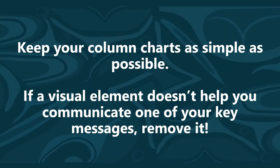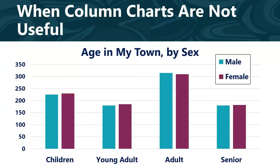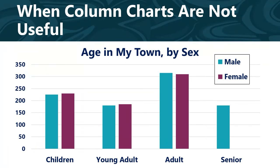Also, and this is true for presenting any health data, make sure your visuals are as simple as possible. That means if a visual element doesn't help you communicate one of your key messages, remove it — including any unnecessary images, labels, logos, borders, grid lines, and backgrounds that can add visual clutter and distract your audience. Everyone has different comfort levels when it comes to interpreting graphs and other data visuals. Make it easy for your audience to understand the story you are telling by turning down the visual noise. Keep in mind that column charts don't work well in certain situations — for example, they have less impact if values are very similar to each other, and they also don't work well if one of the values you are showing is zero.